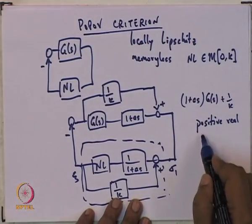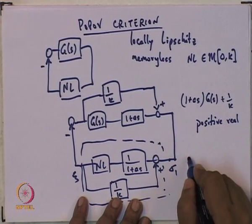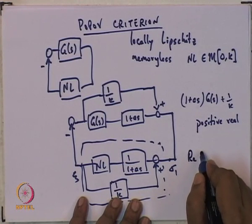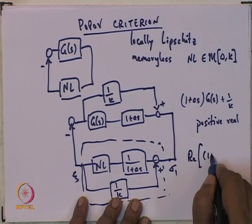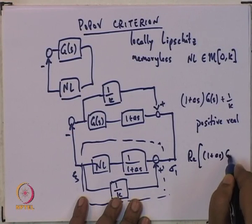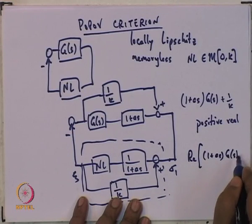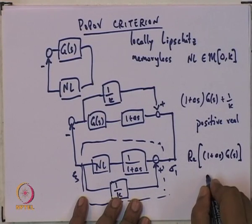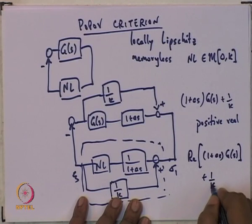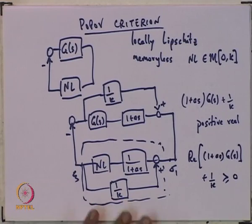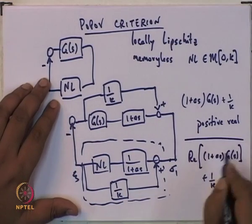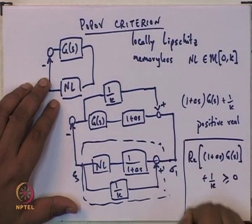The resulting linear plant is (1 + Aλ)G + 1/k, and this must be positive real for the interconnection to be passive. The positive real condition — that the real part of (1 + jAω)G(jω) + 1/k ≥ 0 — is the Popov criterion.